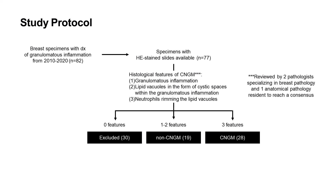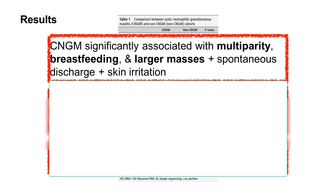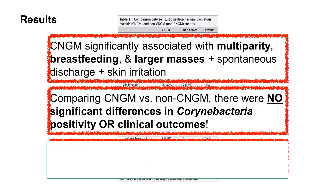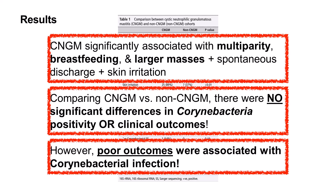The CNGM and non-CNGM cases were then compared regarding their clinical presentation, microbiology studies, treatment, and outcomes. Yang et al. found that, though the CNGM cohort was significantly more associated with multi-parity, breastfeeding, and larger breast masses with spontaneous discharge and skin irritation, there were no significant differences in the rate of coronibacteria positivity or clinical outcomes between the cohorts. However, poor clinical outcomes were associated with coronibacterium infection, highlighting the need for efficient diagnosis and appropriate treatment.